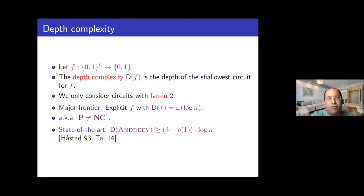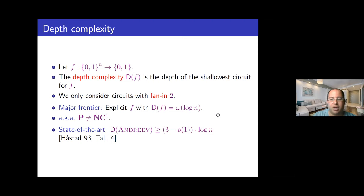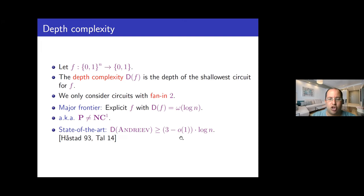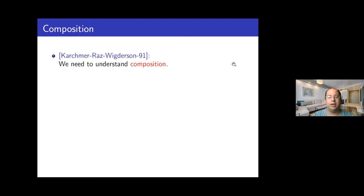For more or less 28 years, we have been stuck at three. Ever since the work of Johan, even though Avishai Tal in 2014 managed to improve this by a small O of one factor, we are basically stuck at three for a very long time. The previous works that got to this constant of three are based on the shrinkage technique, but unfortunately it seems that this technique cannot go beyond three — it seems we have squeezed all the juice we could from this lemon. So the question is: how else can we attack this question?